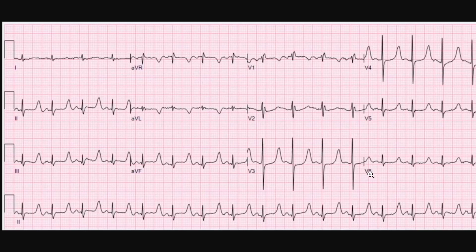An ECG is basically a photograph of how electricity is moving through the heart from many different angles all at the same time, and this can be tremendously helpful in diagnosing very common heart ailments. This is what's known as a 12-lead EKG, and as you can see here, there are four rows of three leads each.